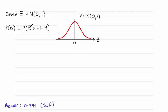We're looking for the probability of Z being greater than minus 1.9. So if I mark that on here, minus 1.9, we're looking at this region to the right of it.